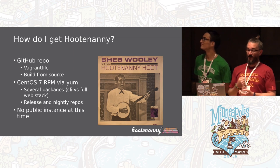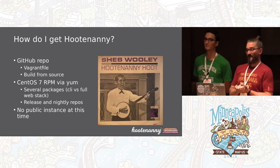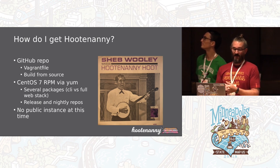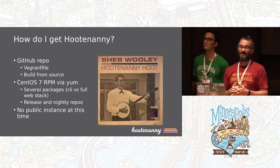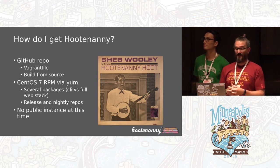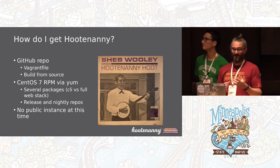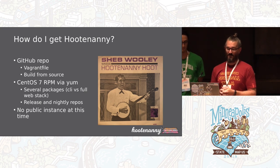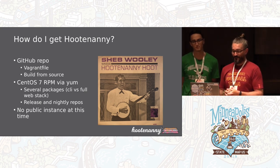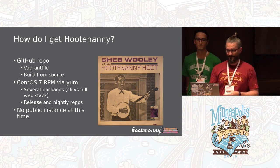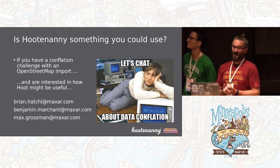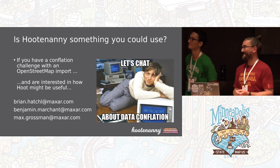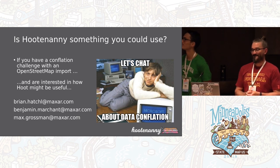To get Hootenanny, we have an open source GitHub repo. We have a Vagrant file that will spin up a VM with all the dependencies so you can build Hootenanny from source. We also have a YUM repo with RPMs for CentOS 7. Search Hootenanny on GitHub to find our repo, or search Hootenanny and RPMs to find the other repo that builds the RPMs with an install doc on configuring the CentOS box to use the Hoot repos. We don't have any public instance at this time. If you have a conflation challenge with an OpenStreetMap import and are interested in how Hootenanny might be useful, let's chat.